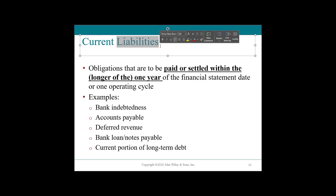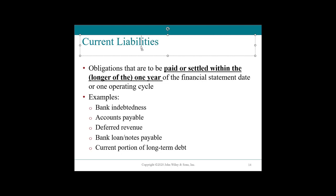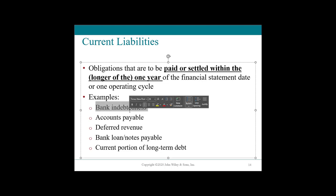A liability is the result of a past transaction that represents a current obligation — an outflow of future economic resources — that could be cash, services, or goods that we cannot get out of. Something we owe because we did or received something. When it's current, it's owed within the next year. These can include short-term bank loans or a portion of longer debt due within one year.